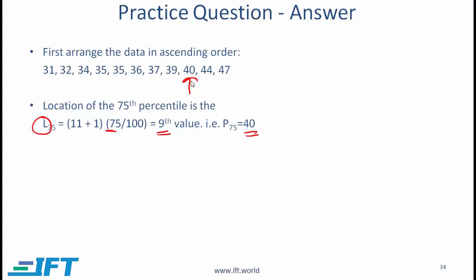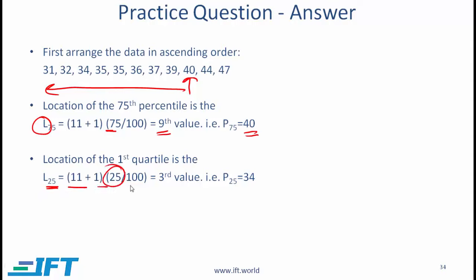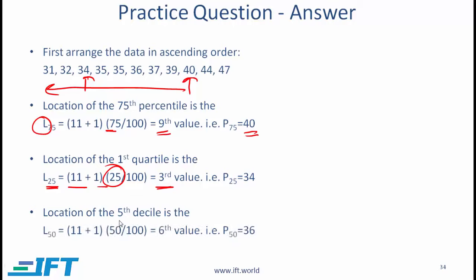For the 1st quartile (25th percentile), the location is (n + 1) × (25/100) = 3, and the 3rd item is 34, so P25 = 34. Similarly, the 5th decile (50th percentile) gives P50 = 36.